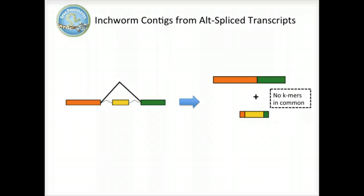This is where Chrysalis comes in. Although these Inchworm contigs lack complete k-mers in common, they maintain partial k-mer overlap at points where the isoforms diverge. The smaller contig can still be associated with the larger contig based on these partial k-mers of length k-1, and we can find reads to support the junction.